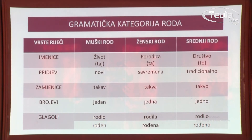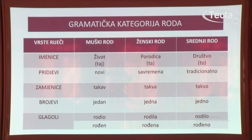Na ovoj tabeli riječ je o gramatičkoj kategoriji roda. Promjenljive vrste riječi razlikuju gramatičku kategoriju roda, a to su imenice, pridjevi, zamjenice, brojevi i glagoli. Gramatička kategorija roda znači da ove promjenljive vrste riječi razlikuju muški, ženski i srednji rod.